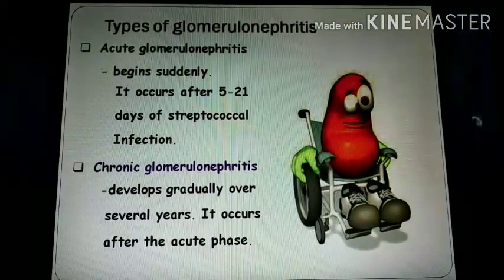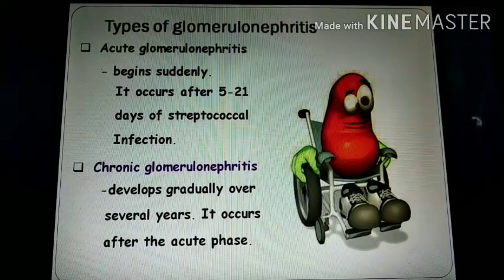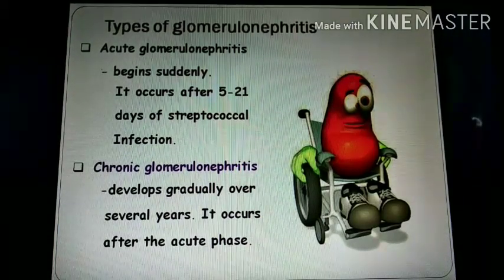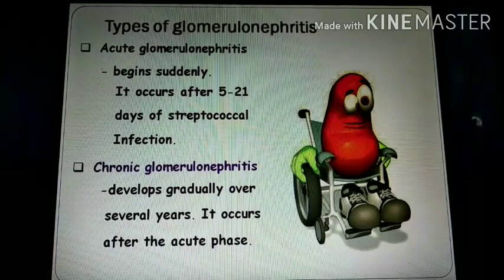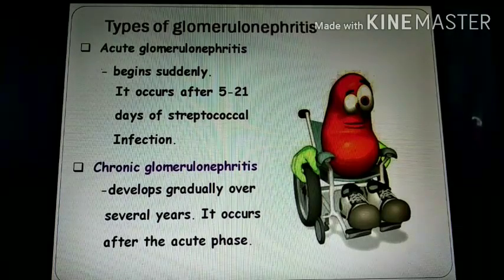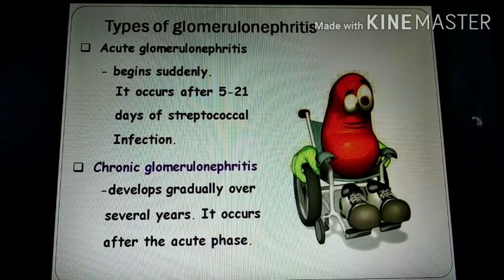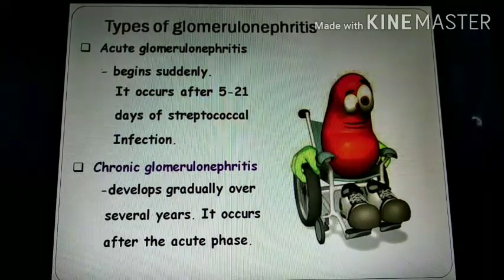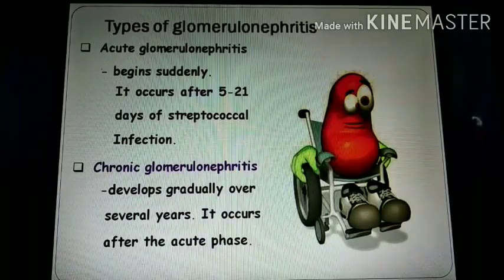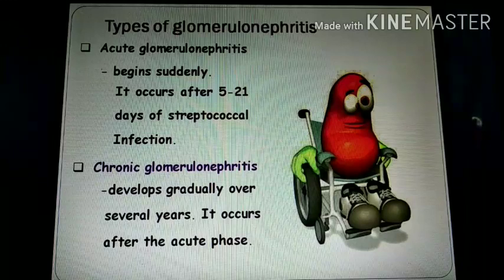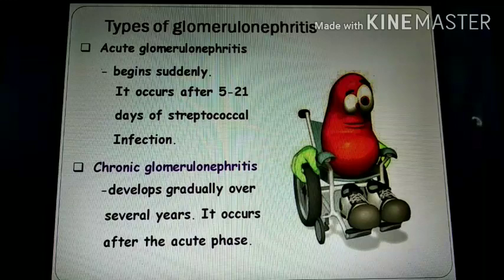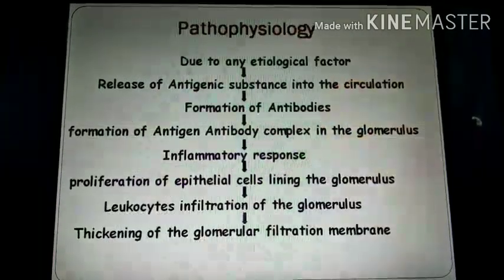The types of glomerulonephritis: there are two types — acute glomerulonephritis and chronic glomerulonephritis. Acute glomerulonephritis begins suddenly and is short-acting; it occurs after 5 to 21 days of streptococcal infection. Chronic glomerulonephritis develops gradually when a person has been infected for months or years. It occurs after the acute phase — if the person has acute glomerulonephritis that is prolonged, it may result in chronic glomerulonephritis.